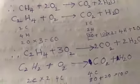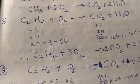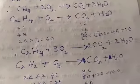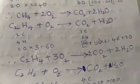Now, after balancing, we get C2H4 plus 3O2 gives 2CO2 plus 2H2O.